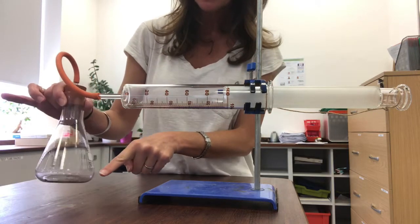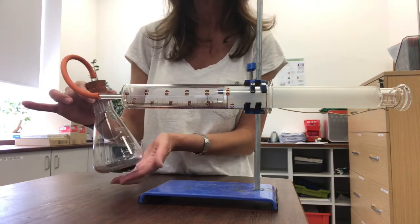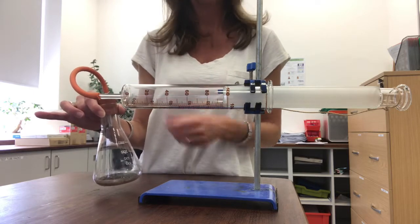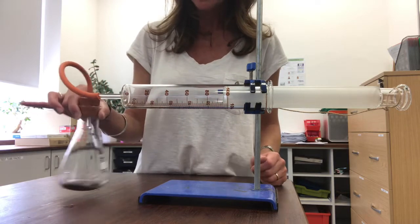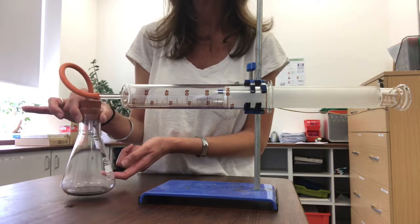Inside my flask here I've put some iron filings. Now I chose to use iron filings rather than iron wool this time because they've got a larger surface area, so I'm hoping they're going to react a little bit faster. So I've got iron filings in there and a little bit of water just to make sure there's enough to help them rust.